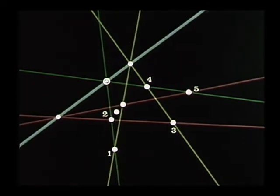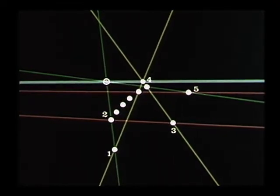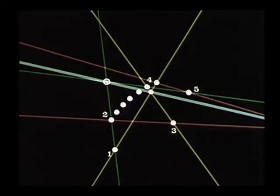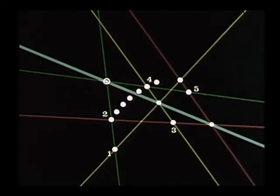Another choice of the Pascal line will give another sixth point of the conic. Varying the Pascal line in a pencil about the intersection of 1, 2 and 4, 5 generates the entire conic section.